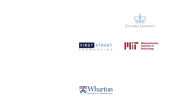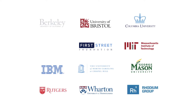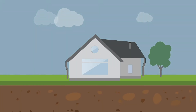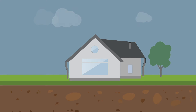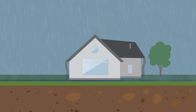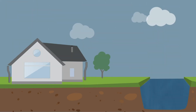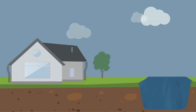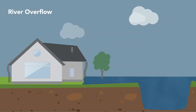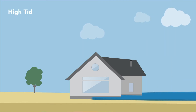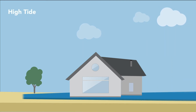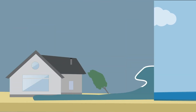The peer-reviewed model used by Flood Factor was created thanks to an unprecedented partnership of more than 80 world-renowned scientists, technologists, and analysts. The model allows Flood Factor to incorporate risk from all major types of flooding, including high-intensity rainfall, overflowing rivers and streams, high tides, and coastal storm surge.